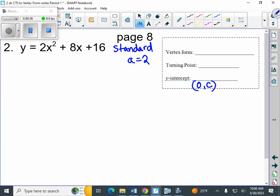The number in front of the x squared term, b is 8, and c is 16, so our y-intercept is 0, 16.